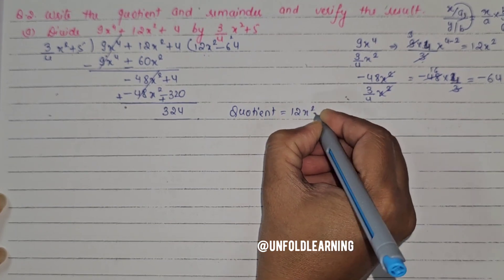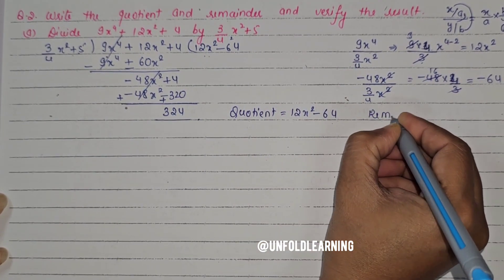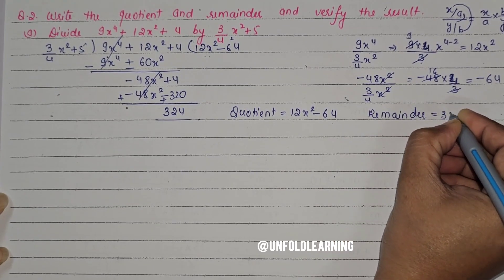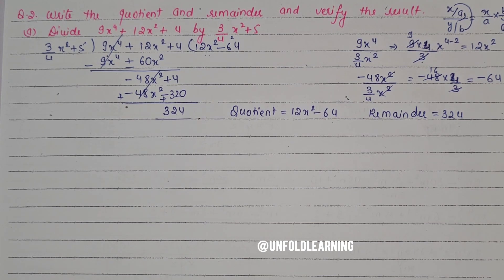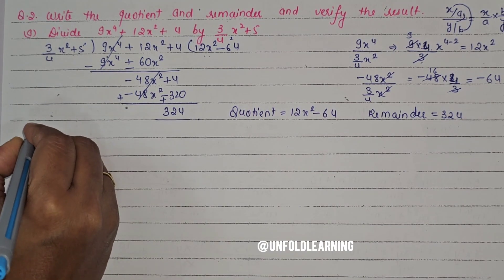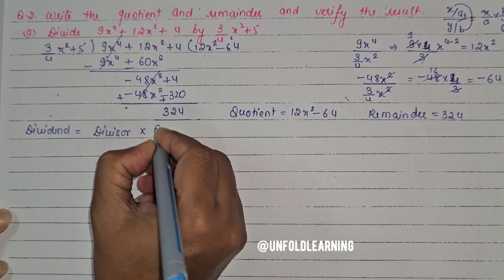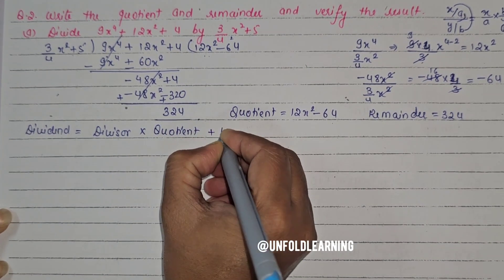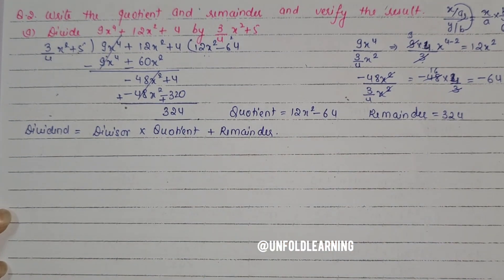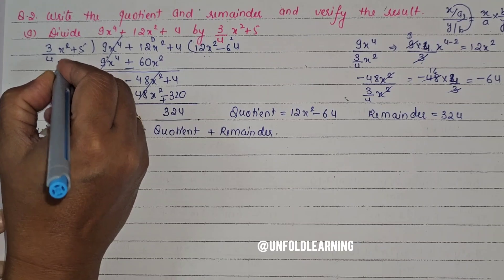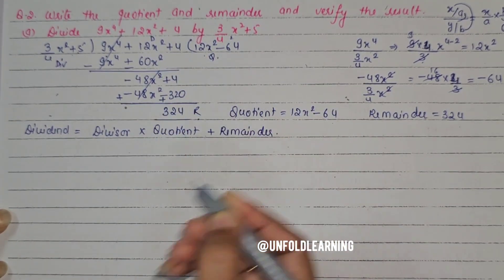So the quotient is 12x² minus 64 and the remainder is 324. Now we verify using the dividend formula: dividend equals divisor times quotient plus remainder.